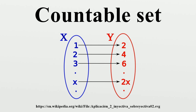Cantor's theorem asserts that if A is a set and P is its power set, i.e., the set of all subsets of A, then there is no surjective function from A to P. As an immediate consequence, the power set P is not countable, i.e., it is uncountable. For an elaboration of this result, see Cantor's diagonal argument. The set of real numbers is uncountable, and so is the set of all infinite sequences of natural numbers. The basic theorem and its corollary are often used to simplify proofs, and N can be replaced with any countably infinite set.